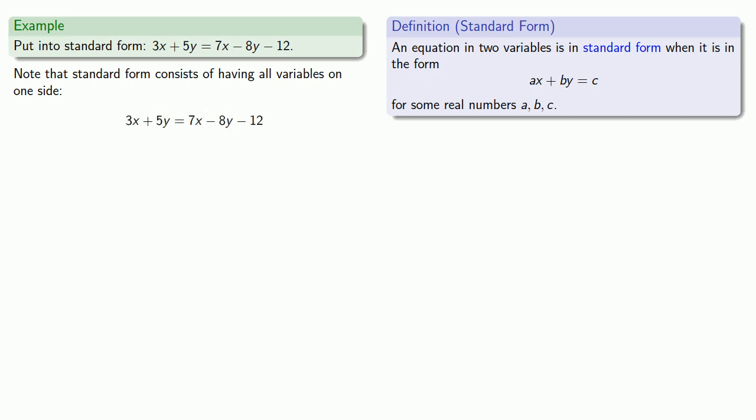We'll write down our equation, and we'll start moving our variables to one side. So I'll add 8y, I'll subtract 7x. And now I have my variables on the left and my constant on the right, and so this equation is now in standard form.